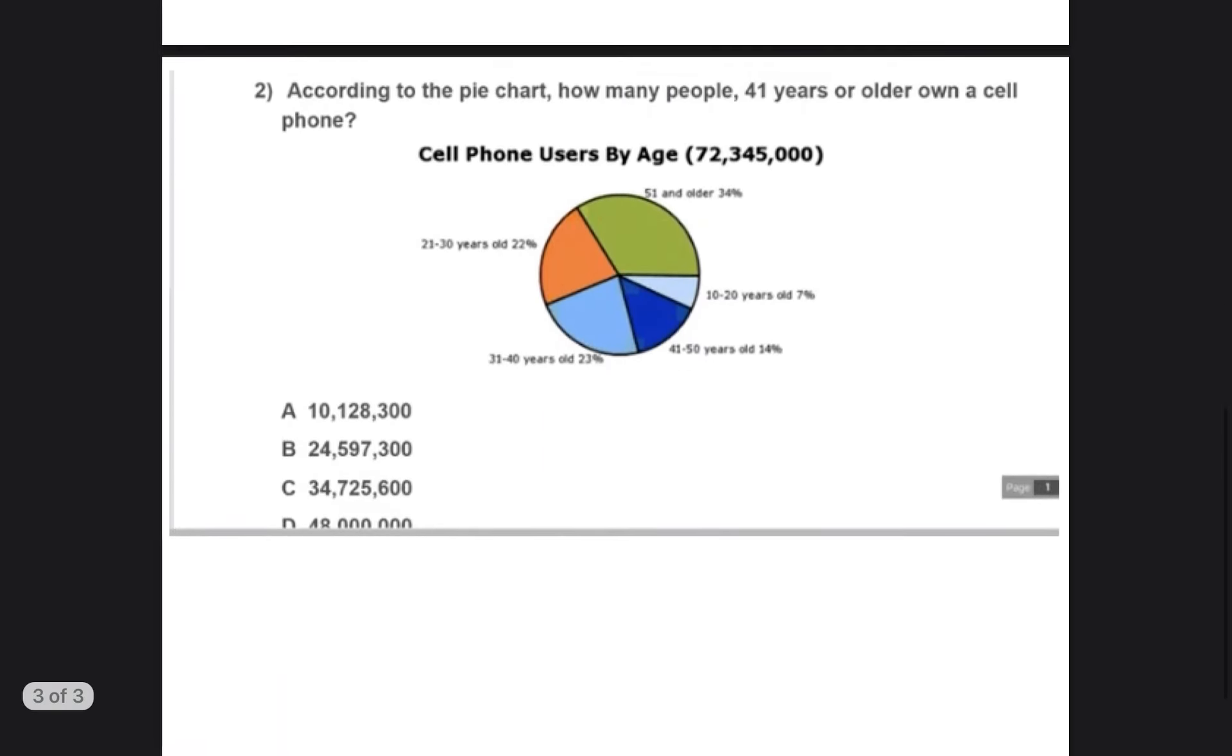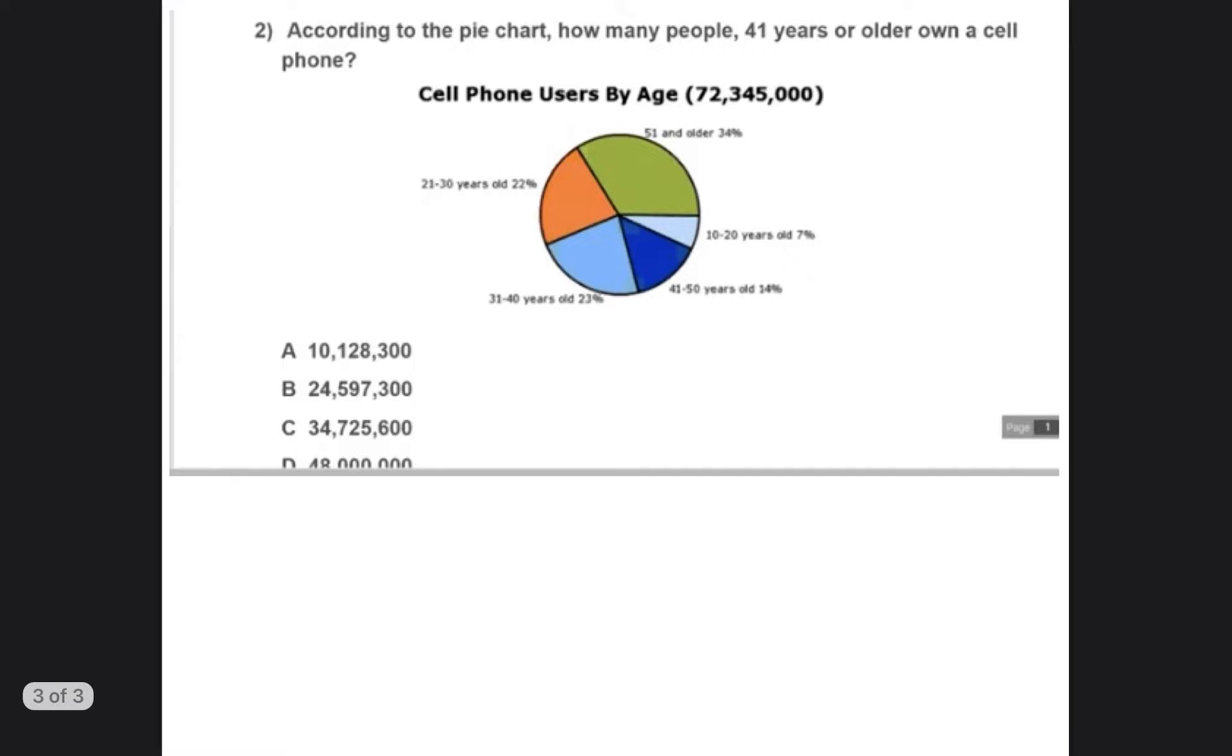Okay, so that was a mouthful, but we have another problem that we're going to do together. So now we're moving from a bar graph to a pie chart. And a pie chart is a pie chart for that exact reason. It looks like it is in the shape of a pie and it's cut up into different pieces. So according to the pie chart, how many people 41 years or older own a cell phone?